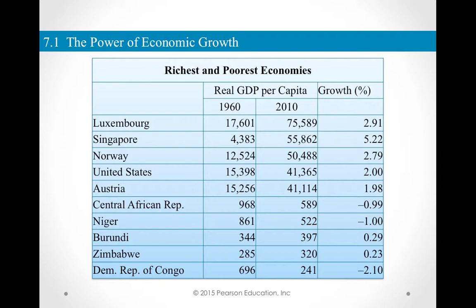Singapore, on the other hand, started at $4,383 real GDP per capita in 1960, and in 2010 had real GDP per capita of $55,862. The implied growth rate is 5.2%. Then there are some of the poorest countries in the world, and at least three of them have grown at a negative rate, meaning they experienced a decline in their standard of living over this 50-year period.